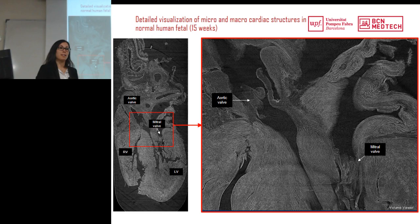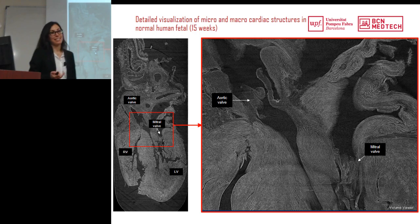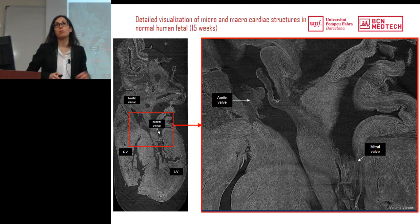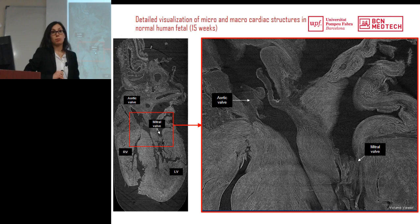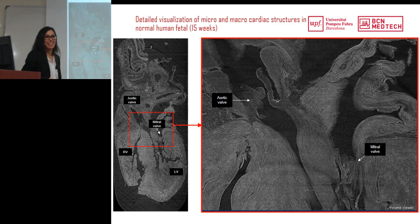Q: Does the intensity of radiation damage the tissue? A: Yes, for living organisms it would be destructive. In Switzerland they did in vivo experiments imaging rat lungs, and the rats did not survive because of the high amount of radiation. So you cannot put a patient in there. For dead tissue like these samples it doesn't matter.